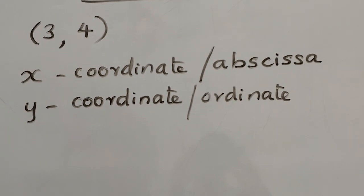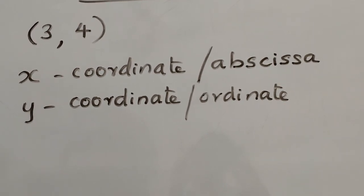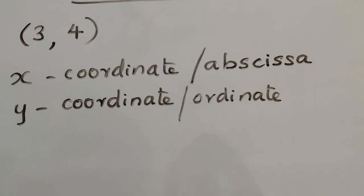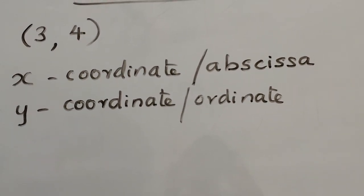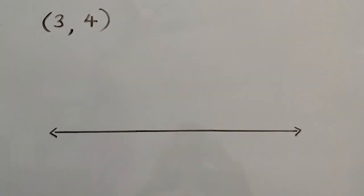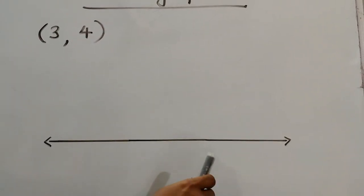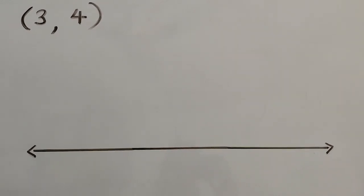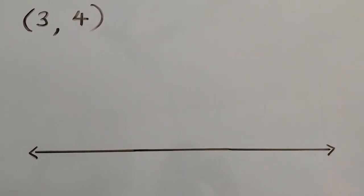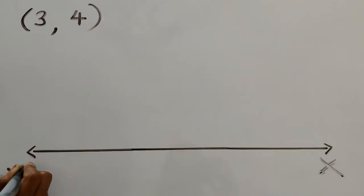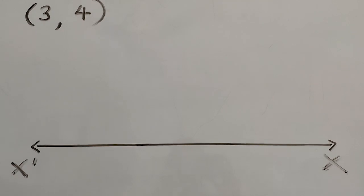Next, how to plot this point on a graph sheet? Before that, let me explain the x-axis, y-axis, origin, and quadrants. The horizontal line is called the x-axis — X to X' is the x-axis.